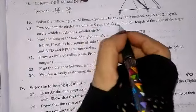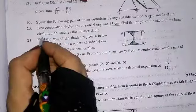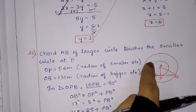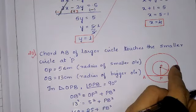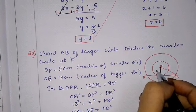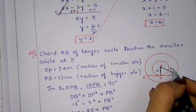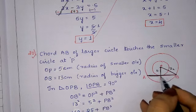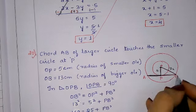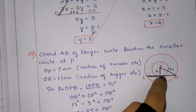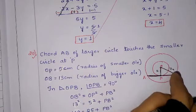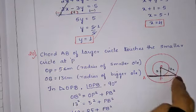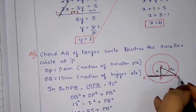Question number 20: concentric circles of radii 5 cm and 13 cm. Find the length of the chord of the larger circle which touches the smaller circle. Concentric means same center. The chord AB touches the smaller circle at point P. OP = 5 cm (radius of smaller circle) and OB = 13 cm (radius of larger circle).